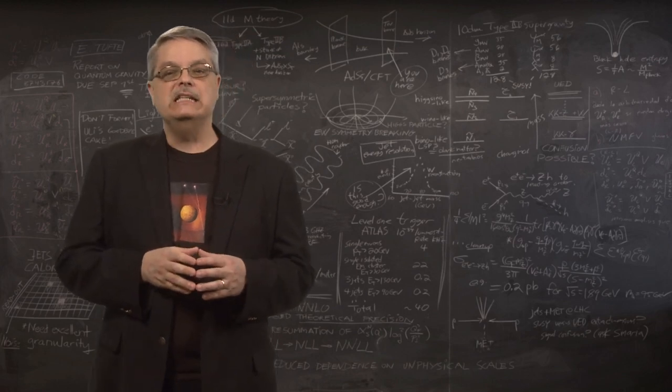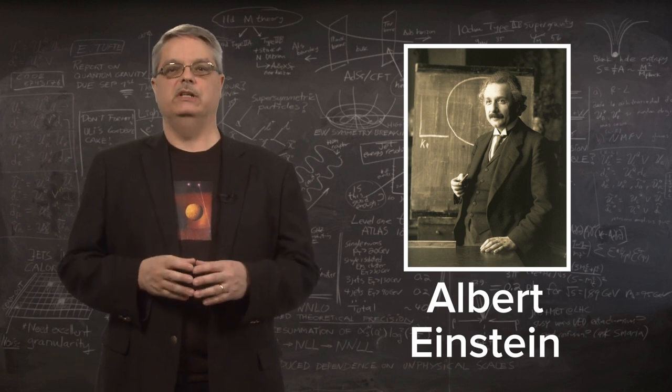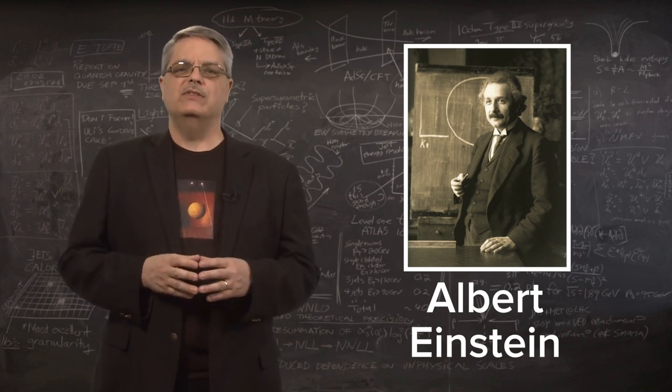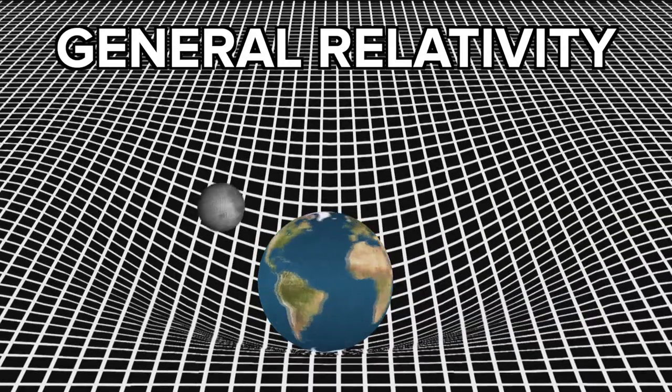It all started in 1915 when Albert Einstein invented a new theory of gravity called general relativity. General relativity treats space as malleable and the very shape of space itself can be distorted.